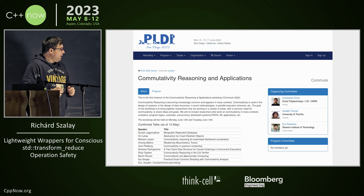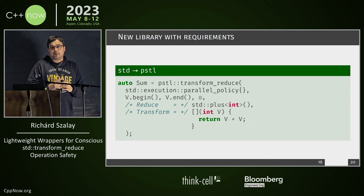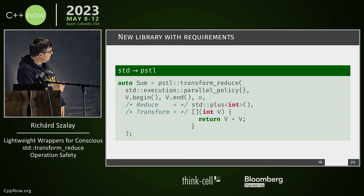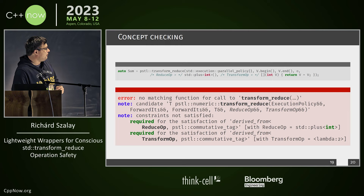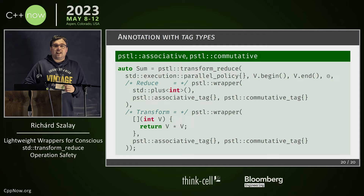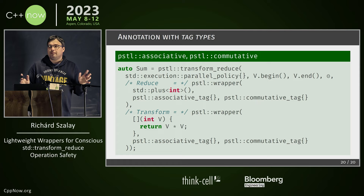Instead, what we did — with one of my students — is to create a wrapper library. I think you can see this here: PSTL. And thanks to all the nice features of C++20, it can at least tell you that you are doing something wrong. It's not checking it, but it's requiring you to at least make a comforting lie.